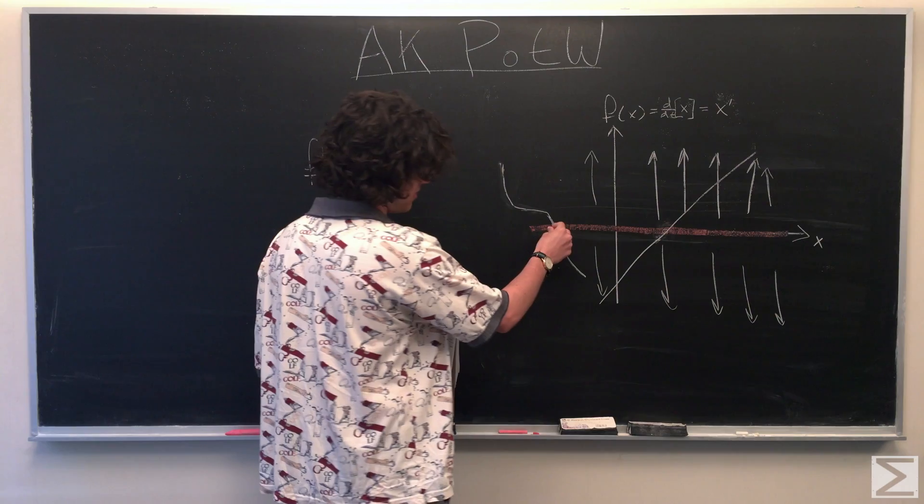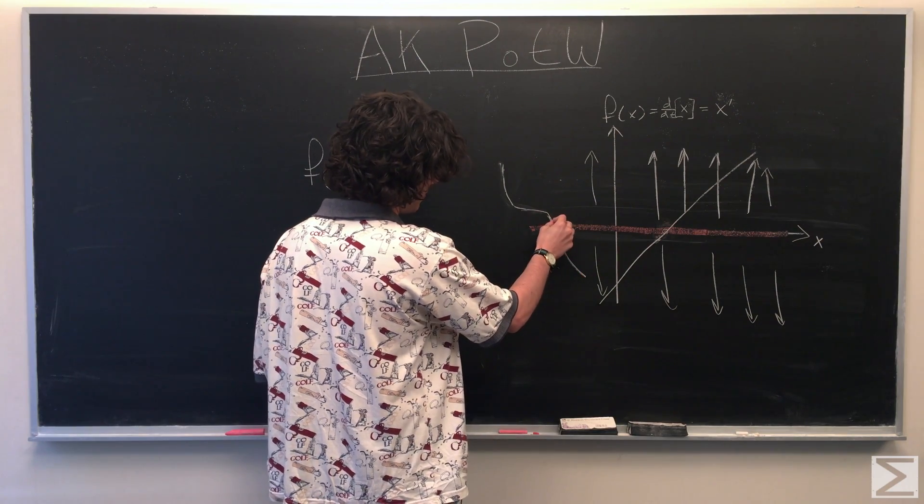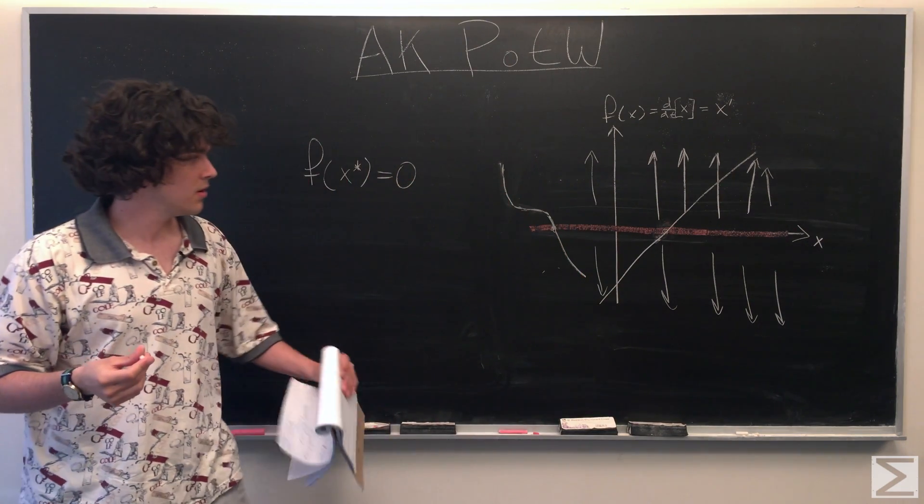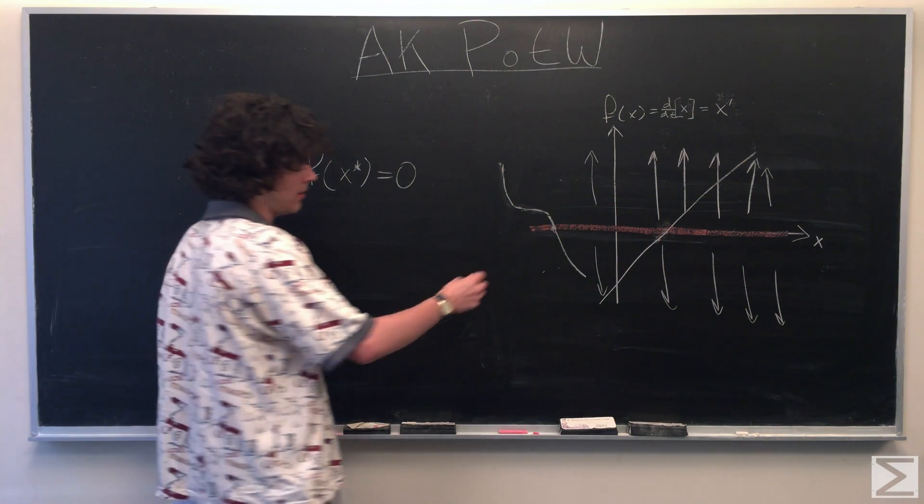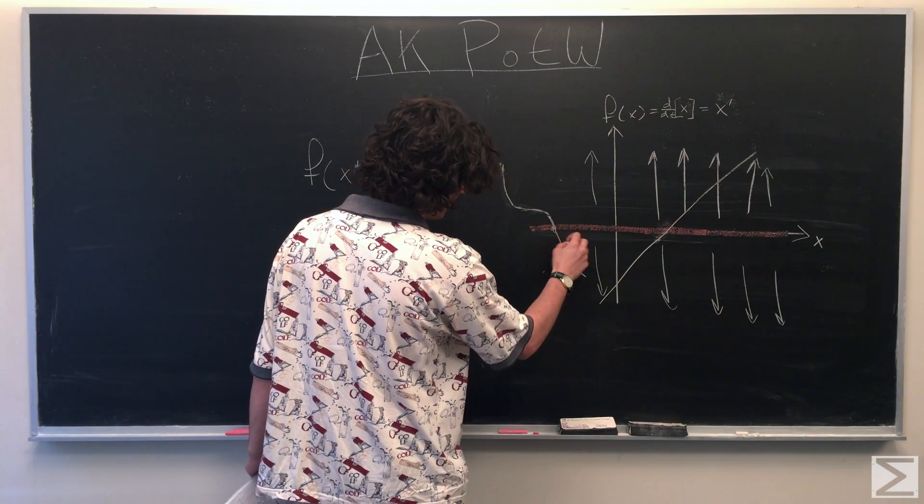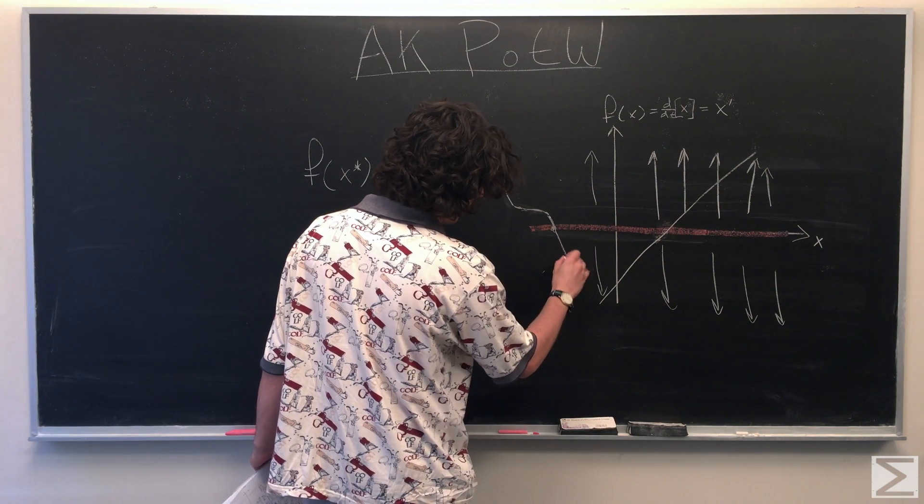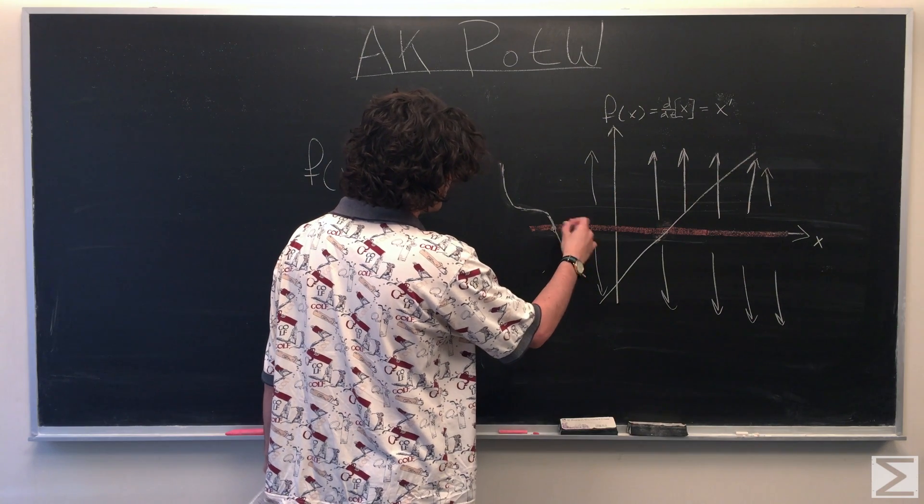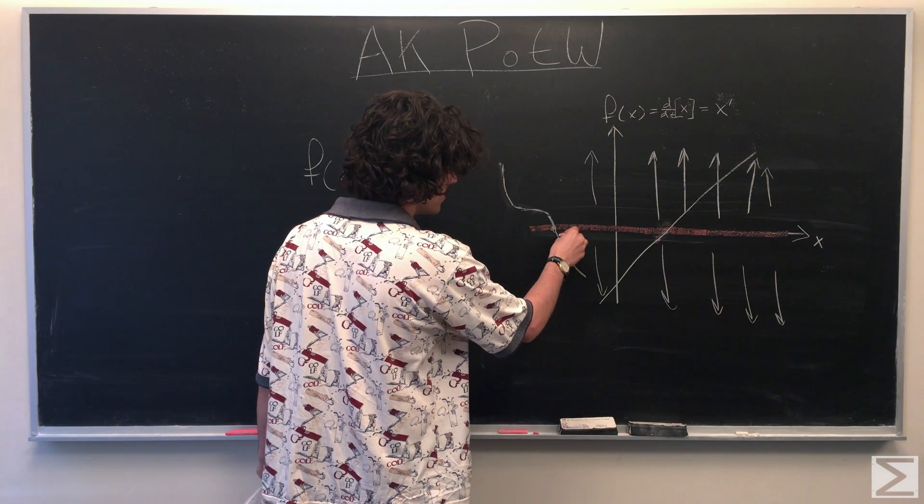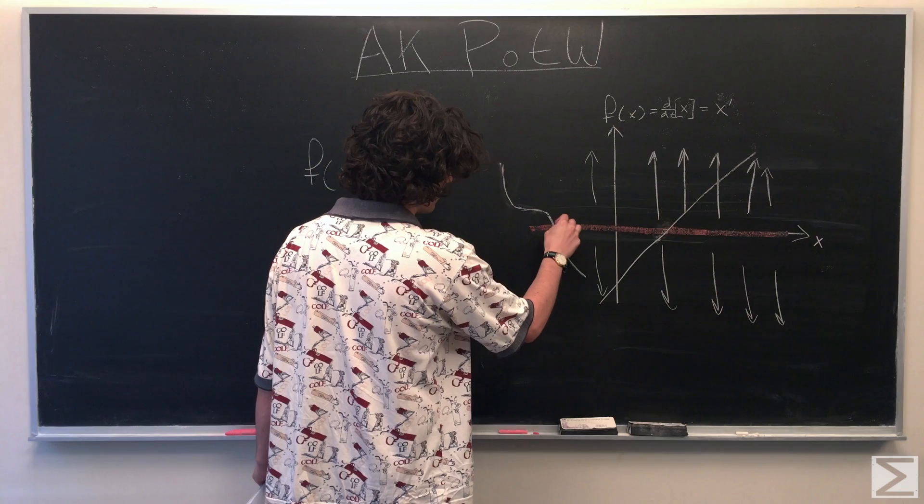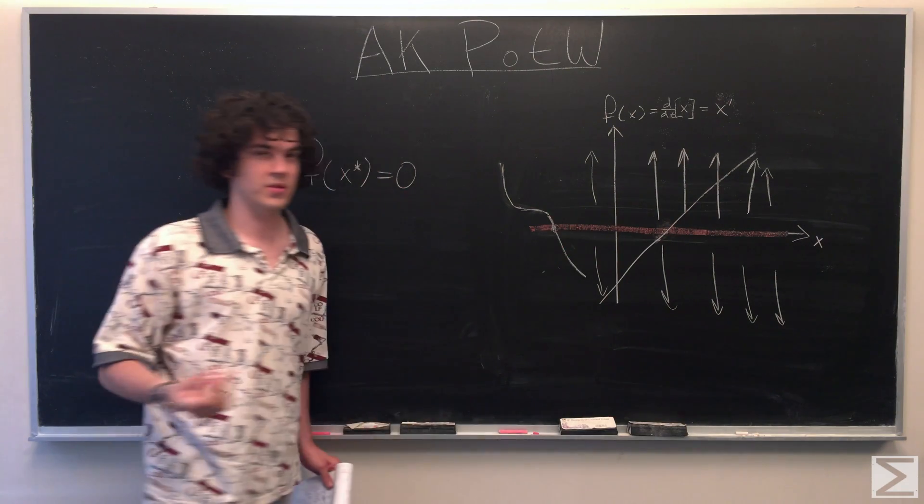And here we can see another example where the converse is true, that if we move to this direction a little bit, the rate of change with respect to time of x is decreasing, so we're just going to go back along this line and end up at that point again.